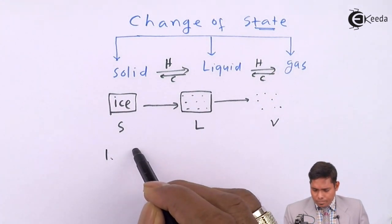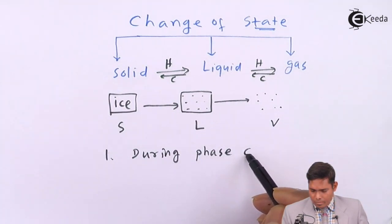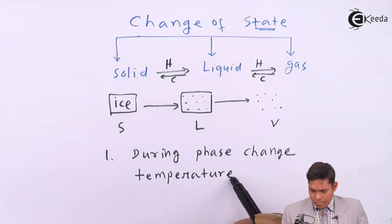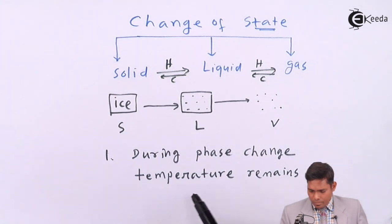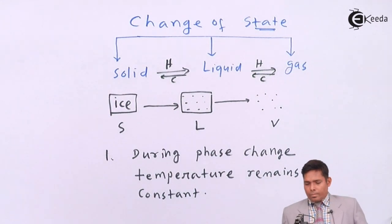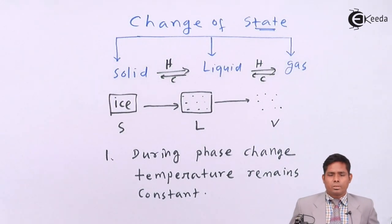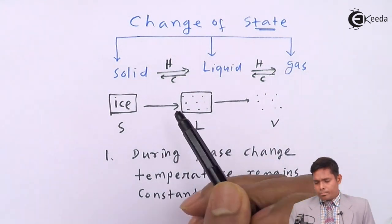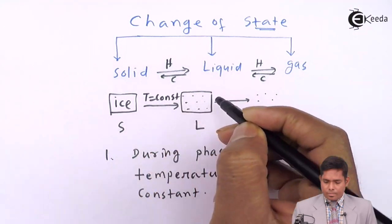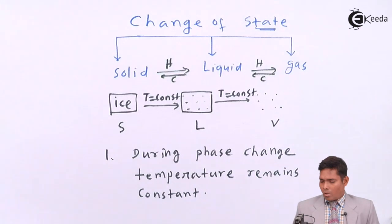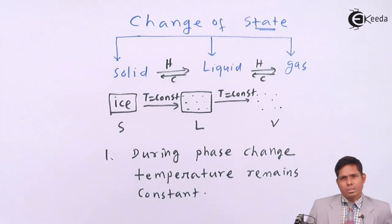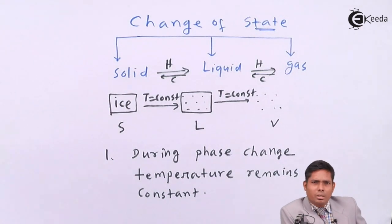During phase change — whether fusion, sublimation, or vaporization — the temperature remains constant. However much heat you supply, the temperature will not rise. The heat supplied is not used in raising the temperature of the substance, but in changing the phase of the substance.